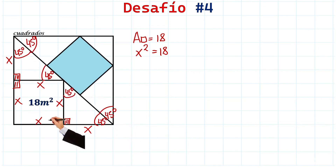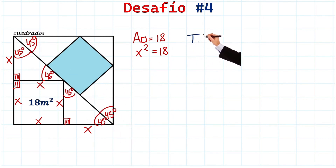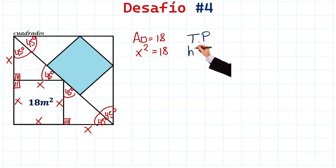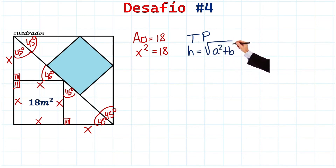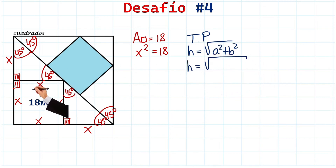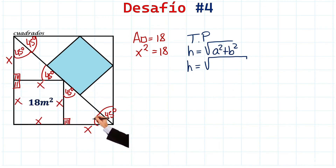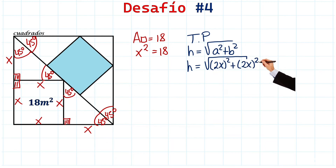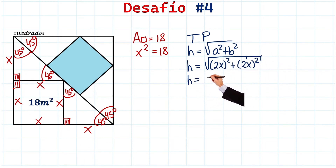We can now find the diagonal of the large square using the Pythagorean theorem. The hypotenuse equals the square root of one leg squared plus the other leg squared. Since each side of the large square measures 2x, we have: hypotenuse equals the square root of (2x)² plus (2x)².